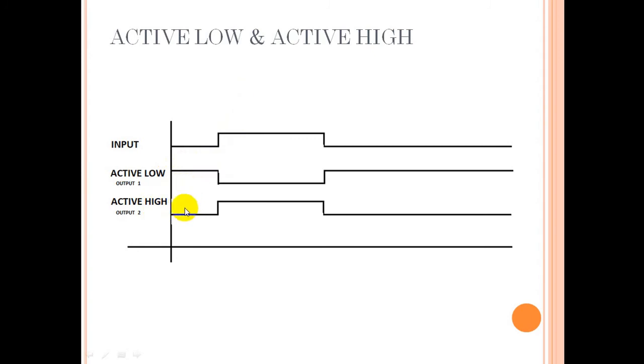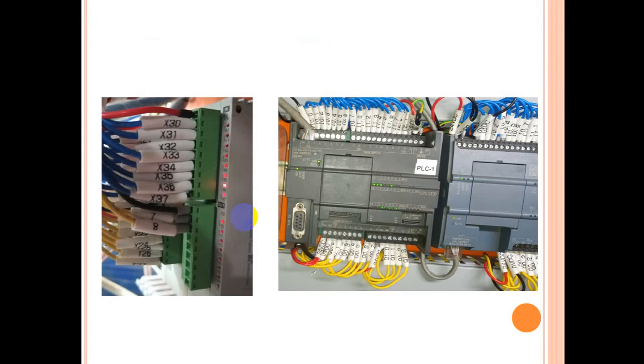Here are a few examples of active low and active high. You can see a Delta PLC wired in active low, and a Siemens which is wired in active high.